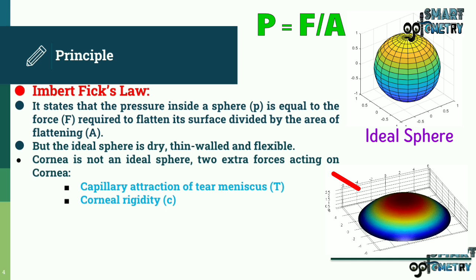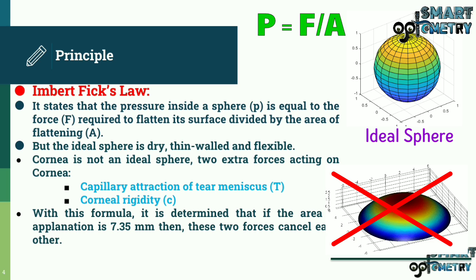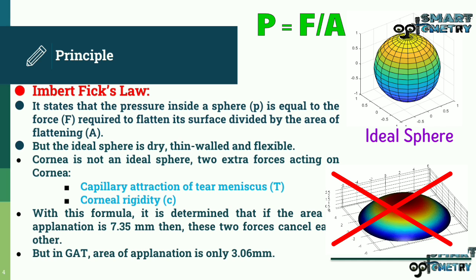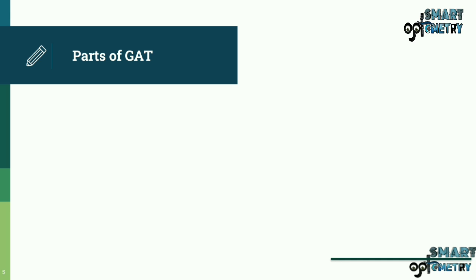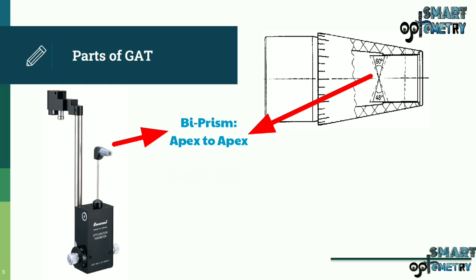Two extra forces acting on the cornea are capillary attraction of the tear meniscus and corneal rigidity. It is determined that if the area of applanation is 7.35 mm, these two forces cancel each other. But in the Goldman Applanation Tonometer the area of applanation is only 3.06 mm, so the modified Imbert-Fick law becomes P equals F plus T minus C divided by A.